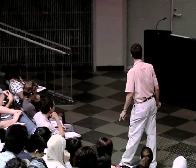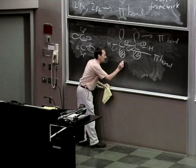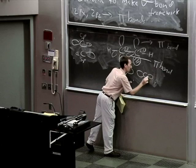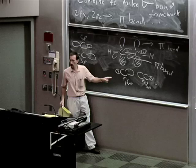How do the 2sp orbitals overlap to make the carbon-carbon sigma bond? We make the C-C sigma bond by overlapping one sp orbital from this carbon with one sp orbital from the other carbon. When we overlap them, we get a region of high probability of having electrons right in the center between the two carbons, and you also get an anti-bonding orbital which we ignore for the sake of simplicity.